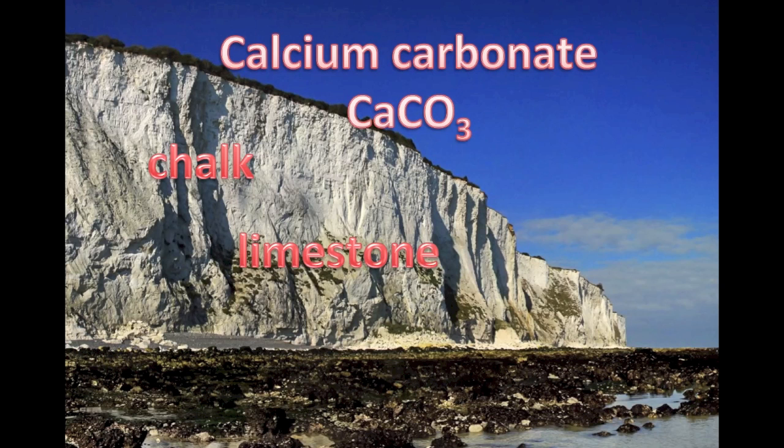So a lot of this topic is about calcium carbonate. Look at the formula, CaCO3, one calcium atom joined to one carbon atom and three oxygen atoms. The two most common forms of calcium carbonate are chalk and limestone. That picture there shows the White Cliffs of Dover, famously made of chalk.